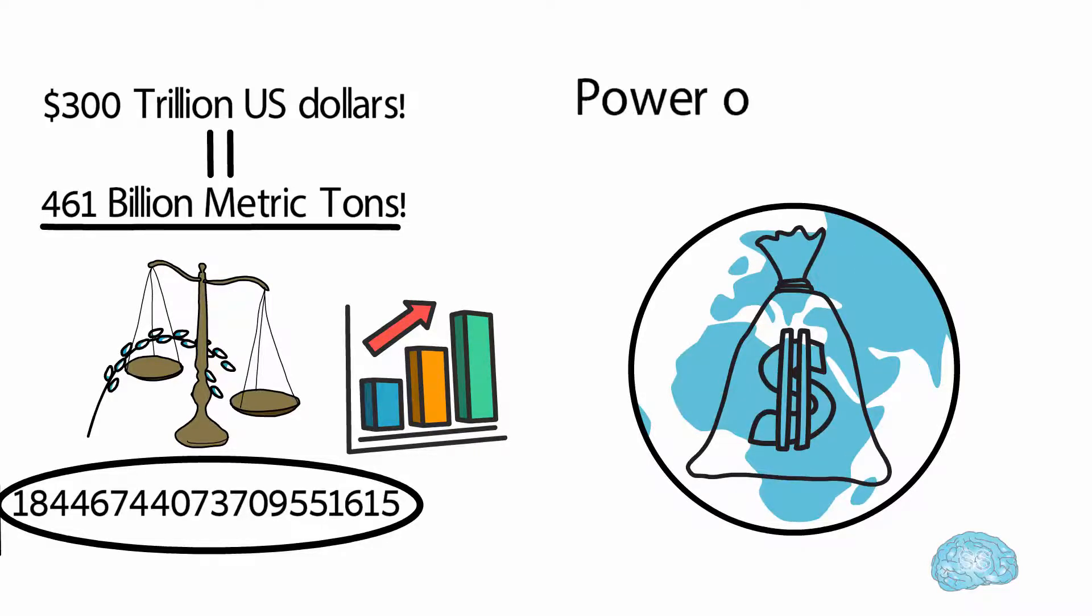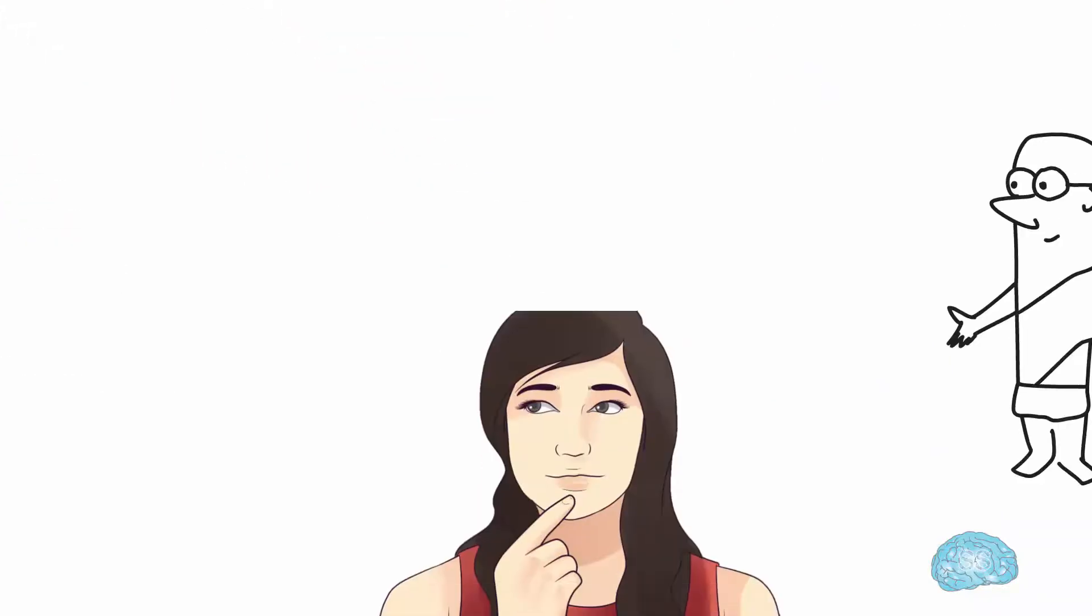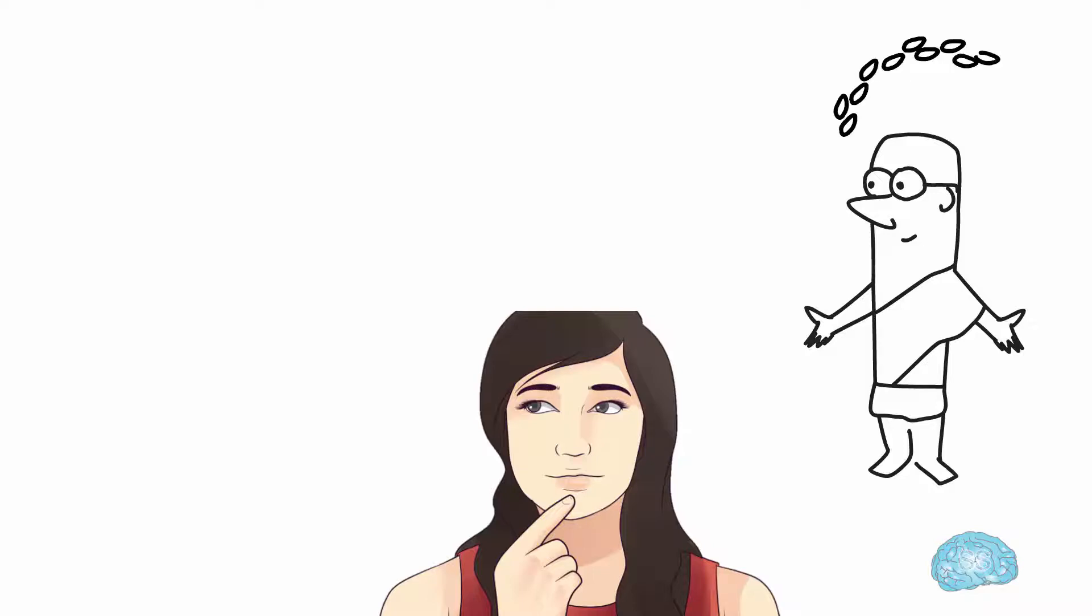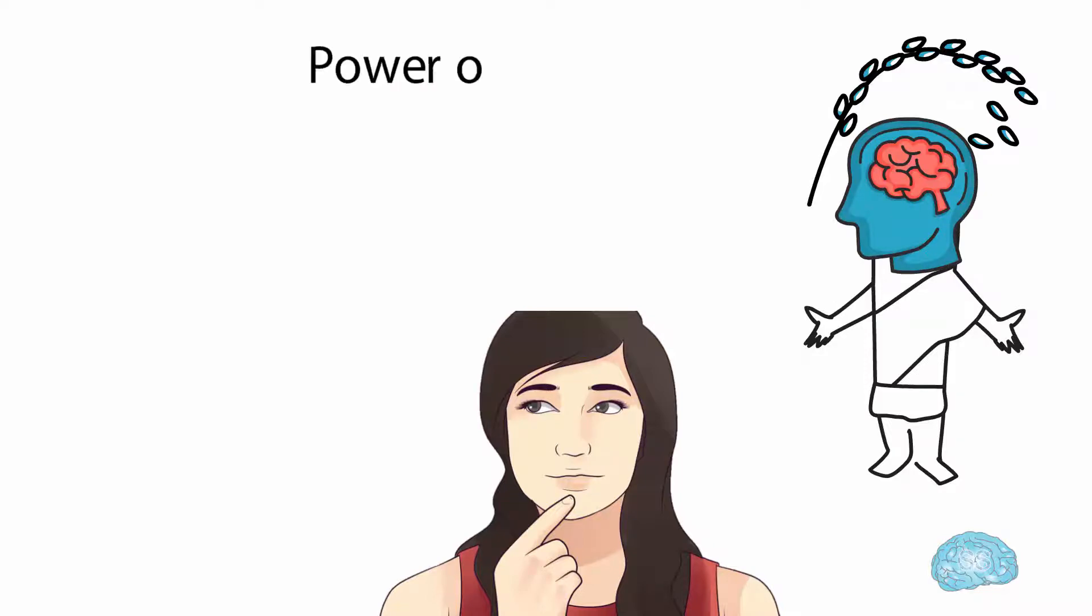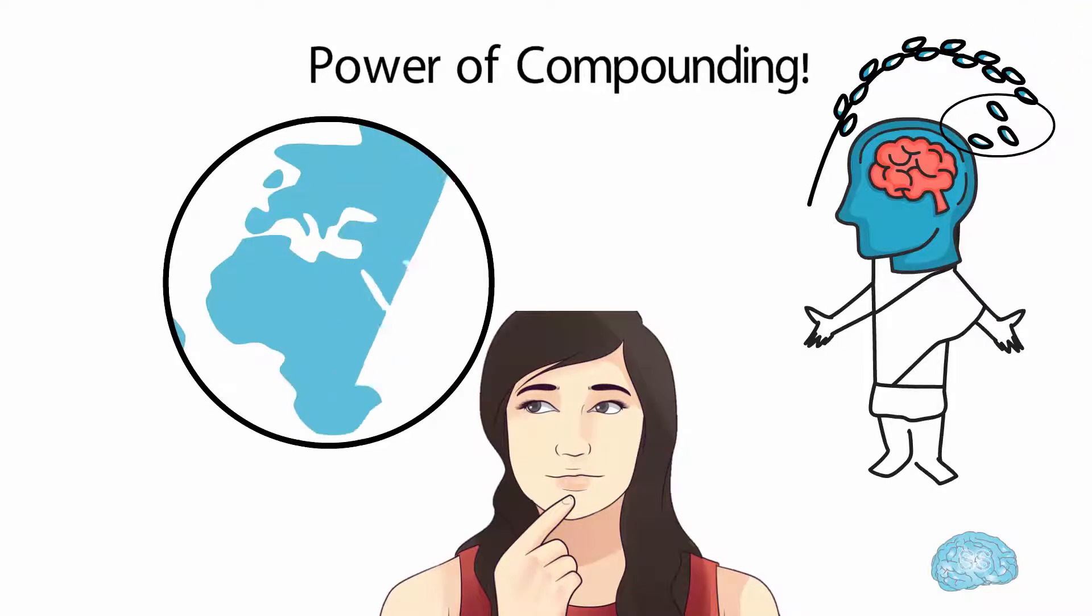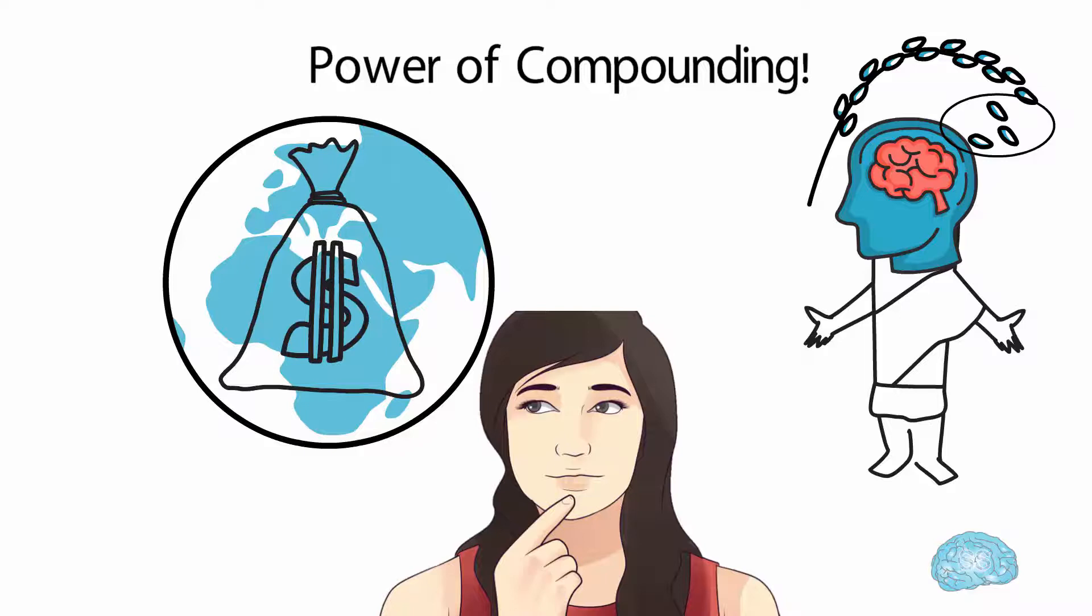This is the power of compounding. So now we understood this person was not a fool to ask just a grain of rice, but he was smart and intelligent. He understood the power of compounding. He didn't only ask for a few grains of rice, but he asked for the entire wealth of this world. With this example, we understood that slowly and gradually, compounding gives us exponential results.